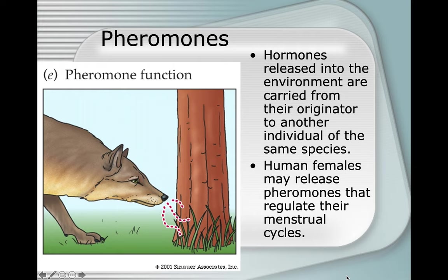Pheromones are detected through an organ called the vomeronasal organ, the VNO. Not all humans have a vomeronasal organ. So the question is, is this something that humans have or not? Personally, I have detected pheromones in other individuals before. We do know that there are select groups of humans that do not react to pheromones and probably don't have a vomeronasal organ.